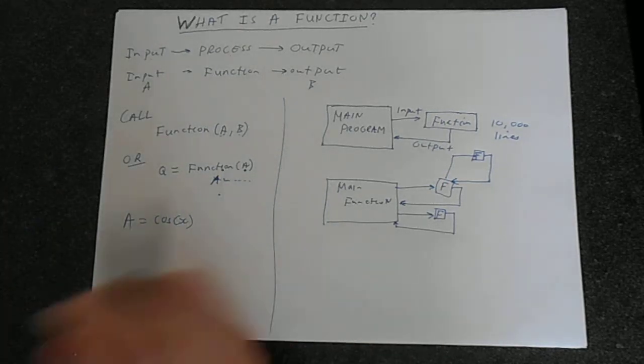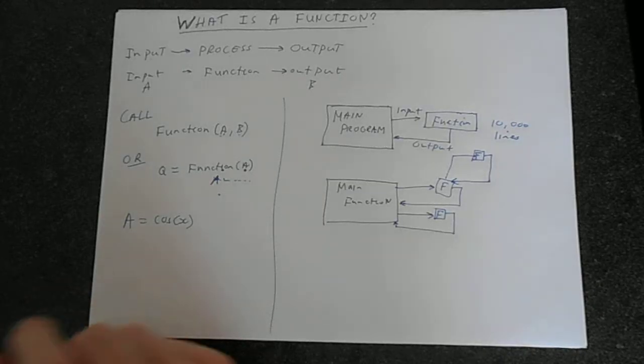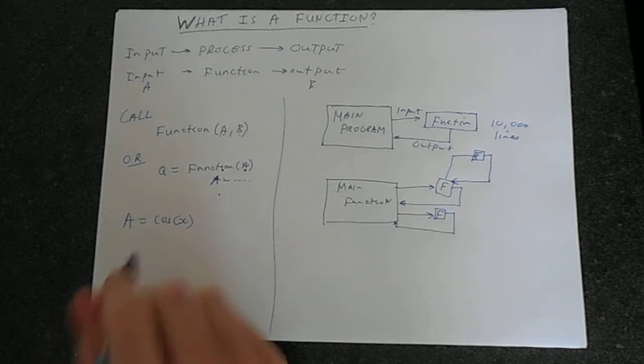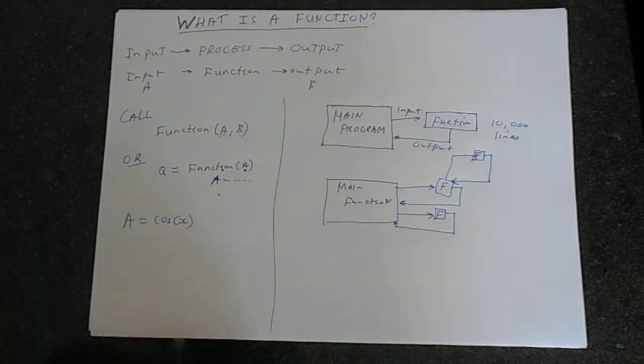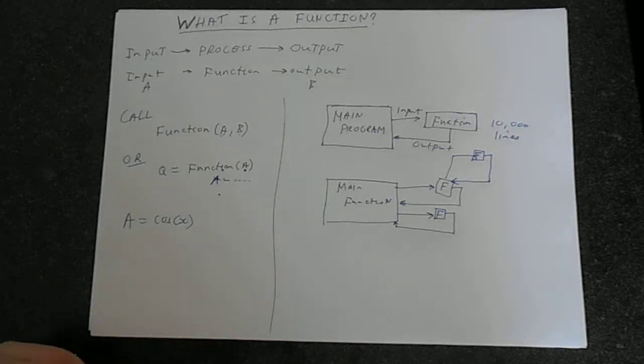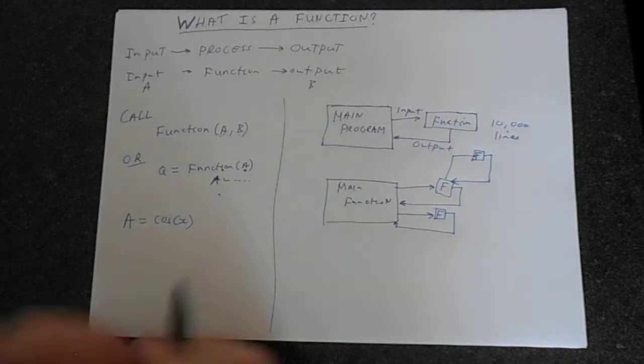Someone has got to have written some function, and you don't want to have to write how to do cosine. You don't have to write a series of computer instructions to the computer every single time you want to use cosine or sine or hyperbolic sine or tangent or any other kind of standard maths function.